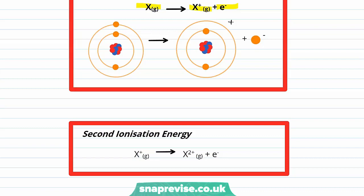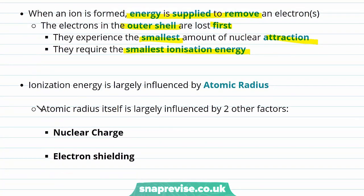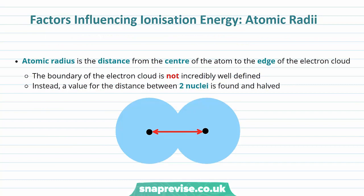Now we've looked at ionization energy, let's look at factors that influence it. In our atom, the negative electrons are attracted to the tiny positively charged nucleus, and it's this attraction that keeps the electrons held in their shells. When an ion is formed, energy is supplied to remove an electron — the electrons in the outermost shells are lost first, because they experience the smallest amount of nuclear attraction and therefore require the smallest ionization energy. The ionization energy is largely influenced by the atomic radius, which is itself influenced by the nuclear charge and the level of electron shielding. Let's take a closer look at atomic radii.